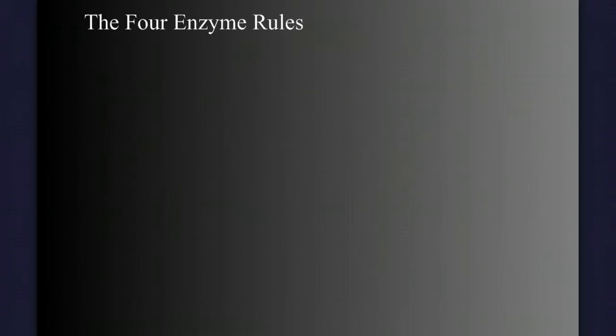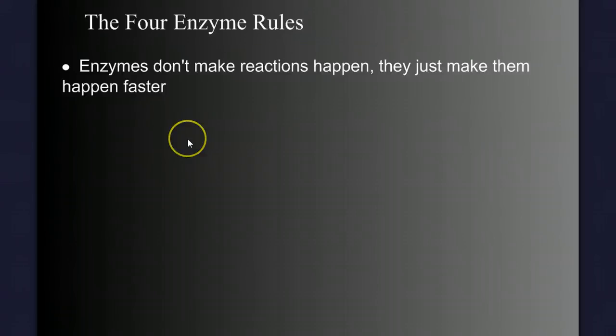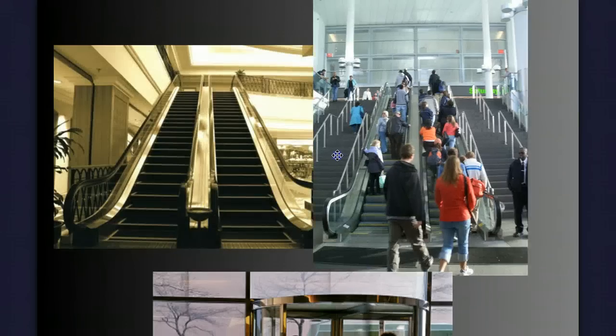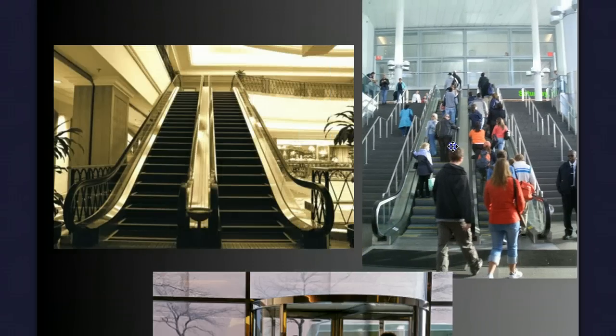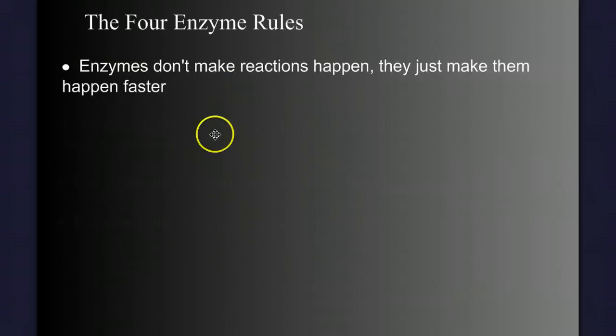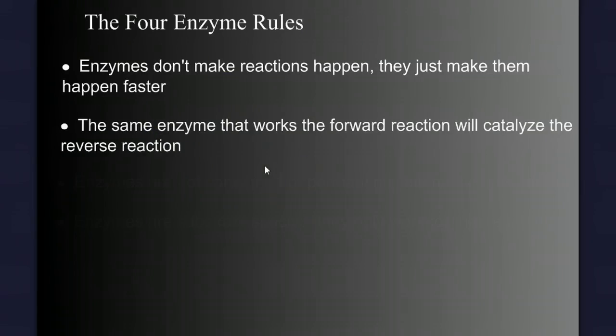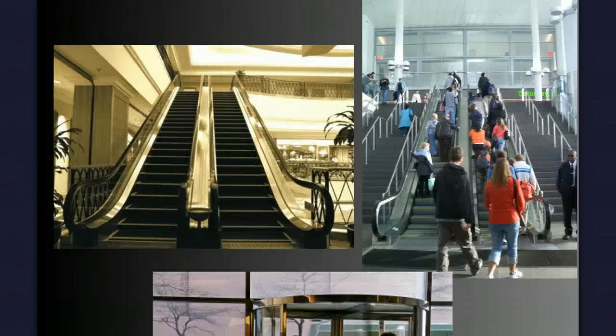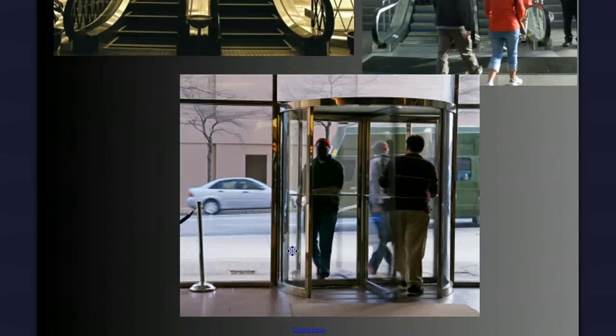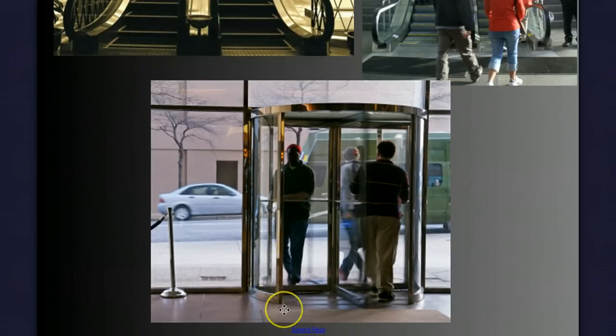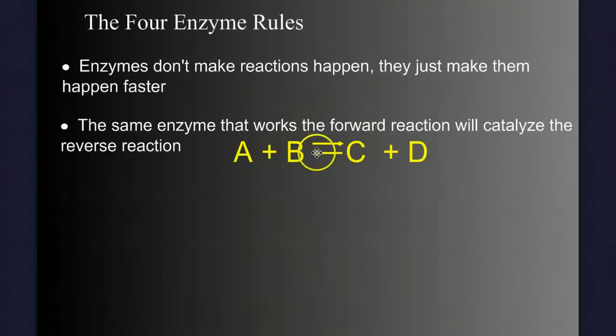Now let's talk about our four enzyme rules. The first one is, enzymes do not make reactions happen. They just make them happen faster. So I have an analogy. Here we are at the mall. And these people want to go from the first floor to the second floor. The escalator is not making them go up. But the escalator can make it happen faster. It's a facilitator. It makes happen what was already going to happen. Number two, the same enzyme that works the forward reaction will catalyze the reverse reaction. Most reactions are reversible. So whatever the enzyme runs the forward reaction will also catalyze the reverse reaction. My metaphor, my analogy, my mental picture of this is a revolving door. This door doesn't care if you're coming in the building or out of the building. It's going to make it easier. So one enzyme handles both of these arrows here.